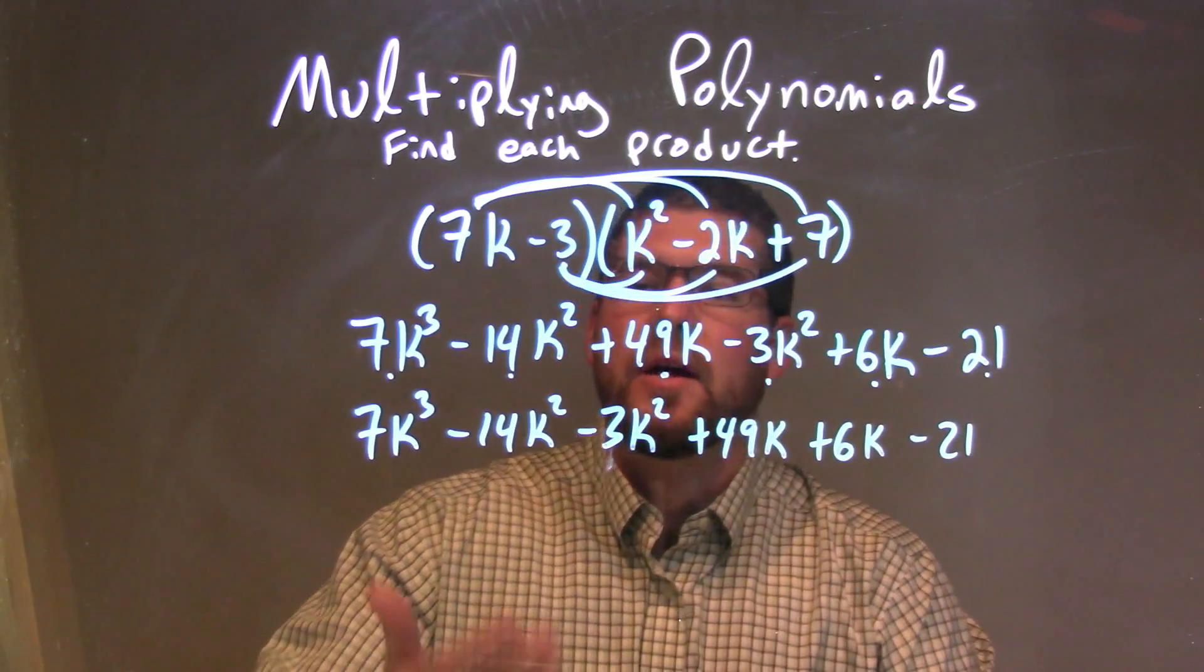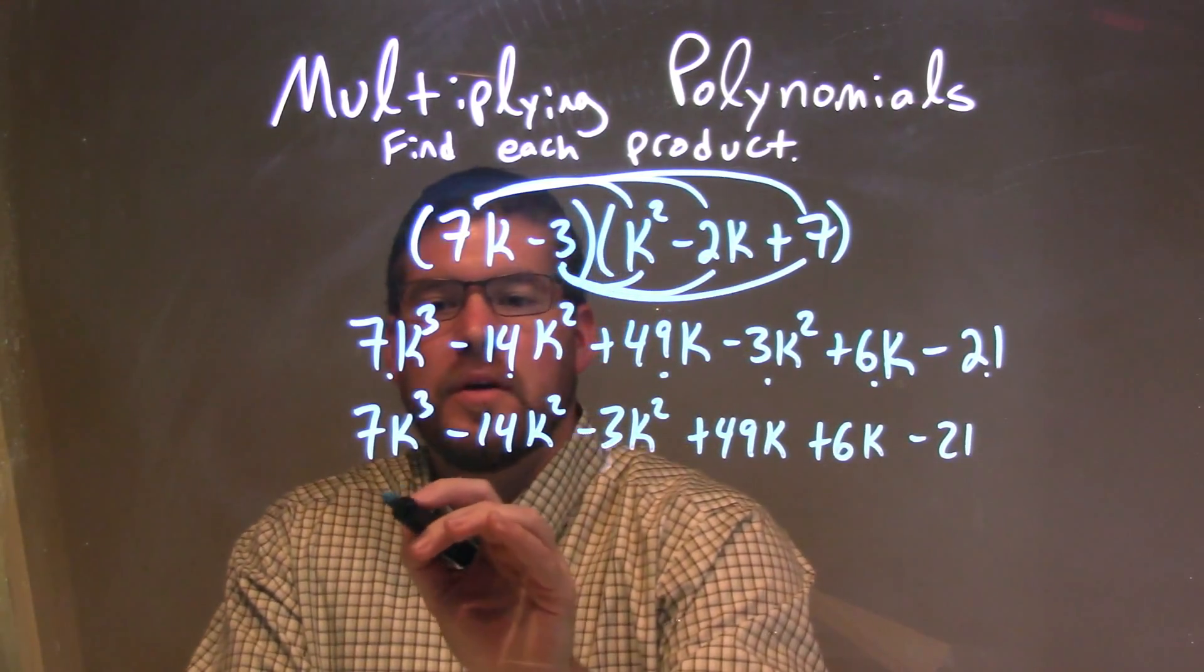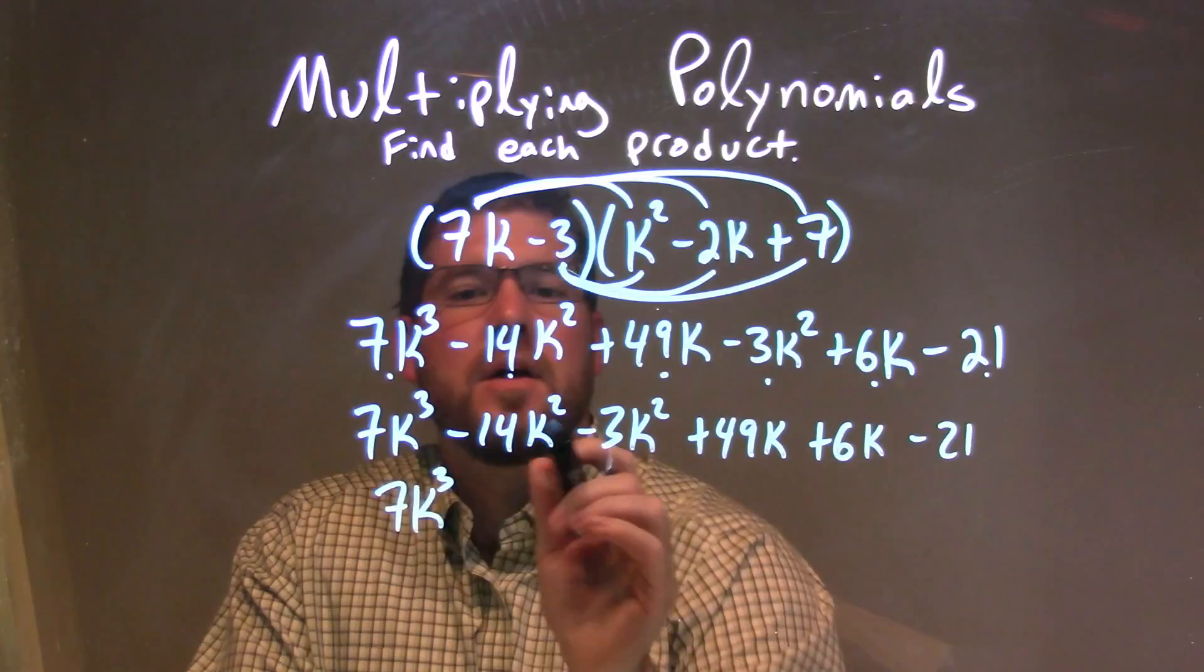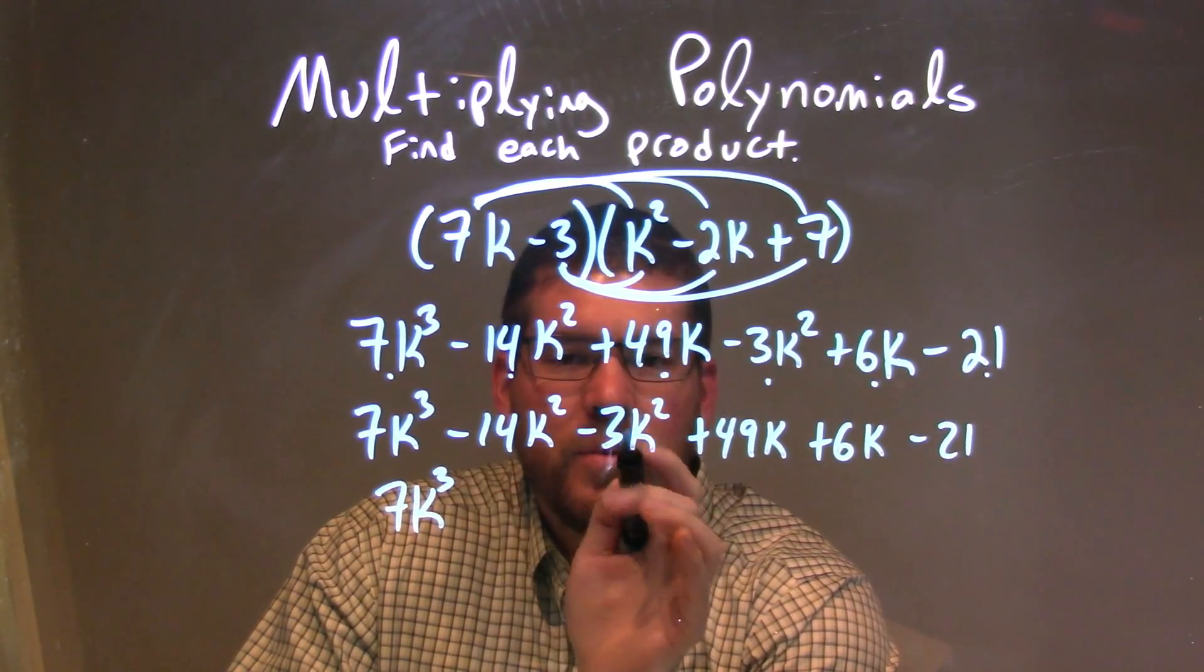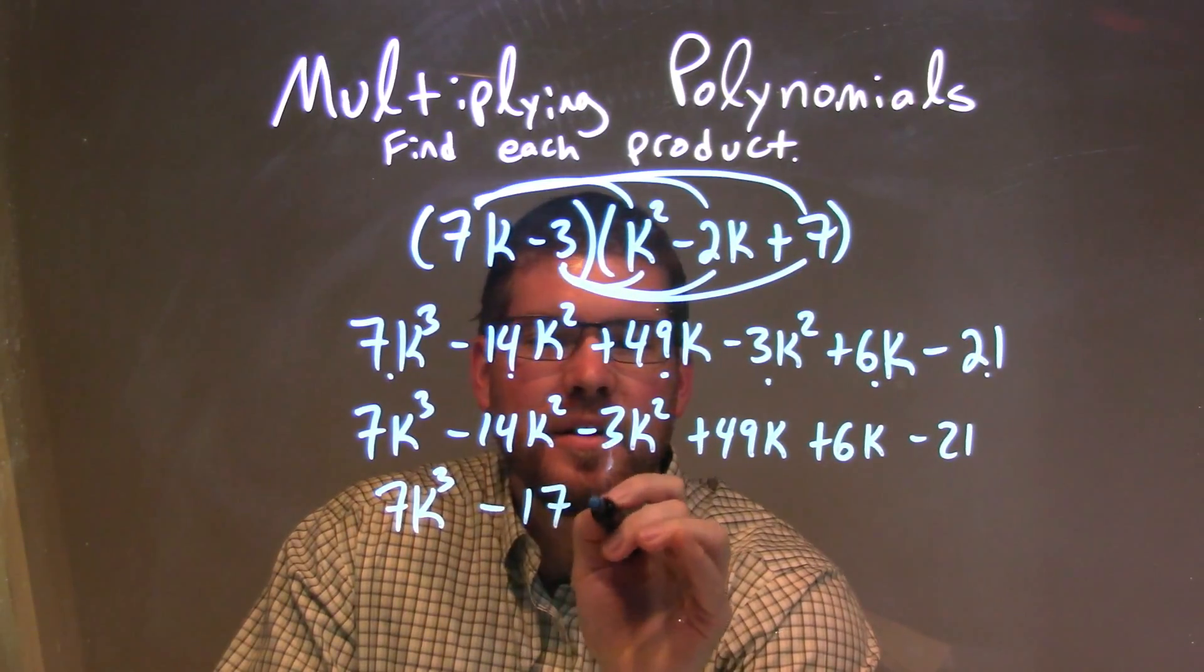Now we need to combine our like terms. We have 7k to the third; there's nothing else to the third, so this is by itself. But my minus 14k squared and minus 3k squared can be minus 17k squared.